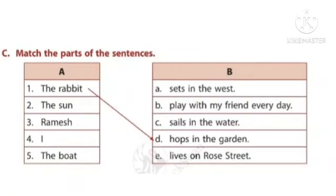Exercise C: match the parts of the sentences. In column A they are given: the rabbit, the sun, Ramesh, I, and the boat. In column B: sets in the west, play with my friend every day, sails in the water, hops in the garden, lives on Ross Street.